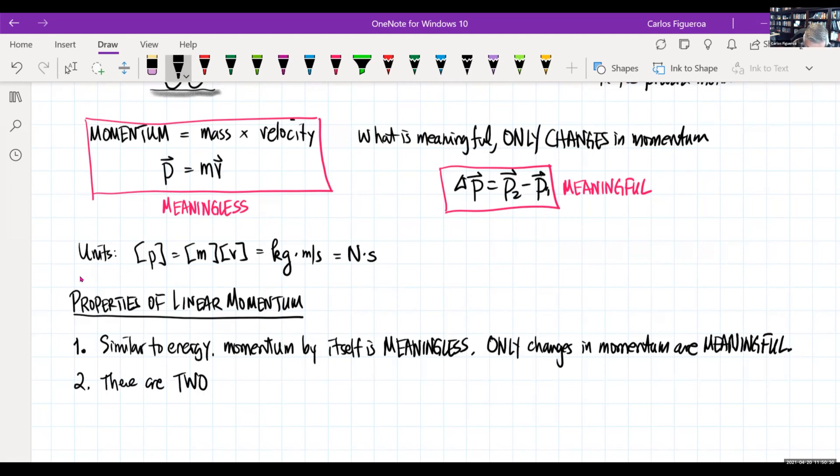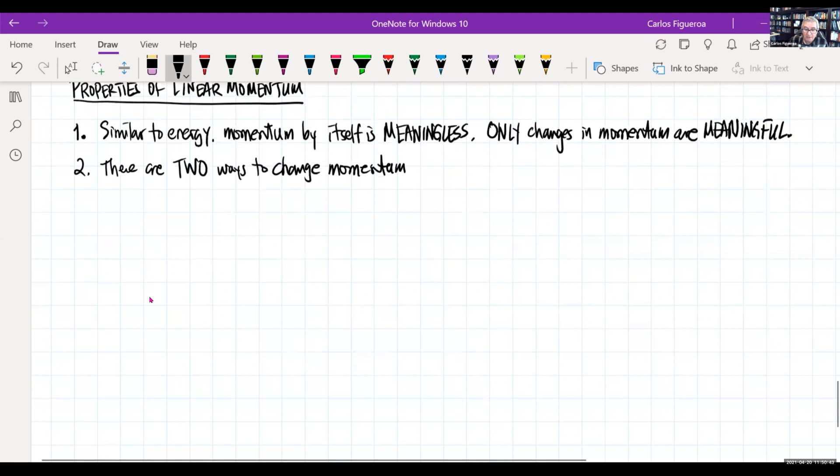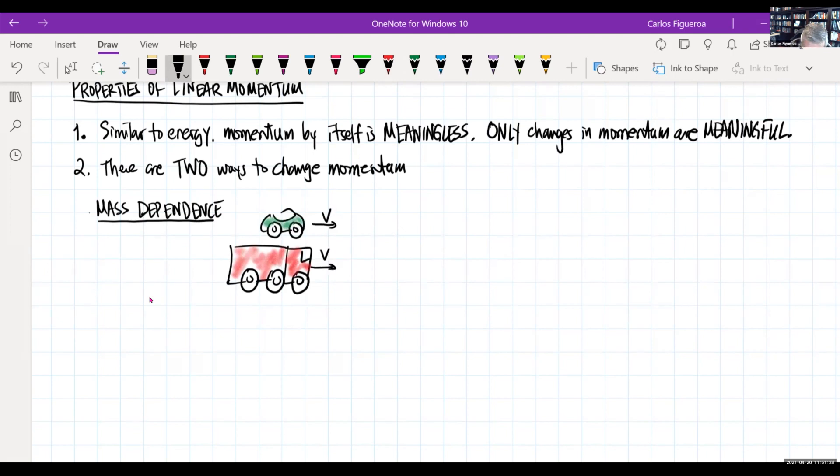Two. There are two ways to change momentum. The way we look at that is we look at mass. If I look at the mass dependence, when I think about a mass dependence, I'm going to think about two objects. So I could imagine that I have a small car, and then I have a big truck. And just as before, which we already talked about, I had a green car and I had a red truck. I'm going to assume that their speeds are exactly the same. So clearly this has a small mass. This guy has a large mass.